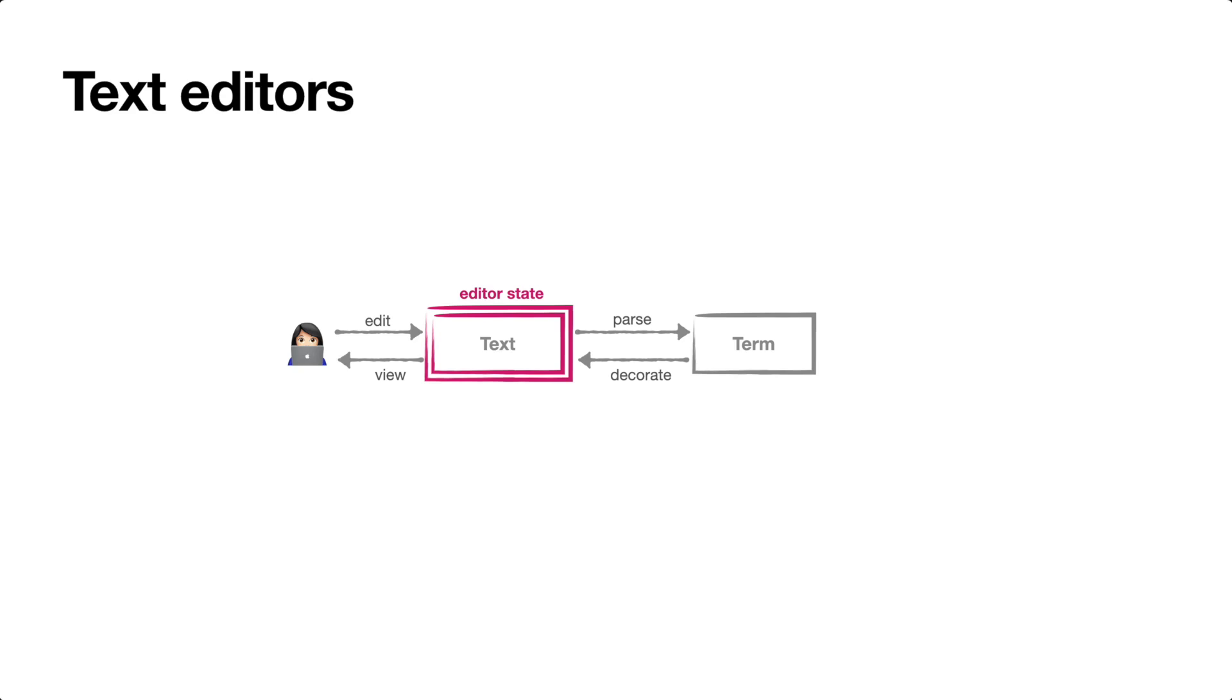A big advantage of this approach is the flexible linear editing affordances of text. A big disadvantage of this approach is that the parsing step often fails. And if the parsing step fails, all the downstream steps are liable to fail, causing gaps in the availability and effectiveness of our language-aware tooling.